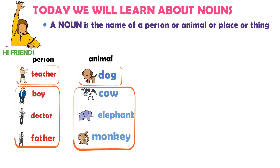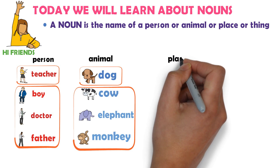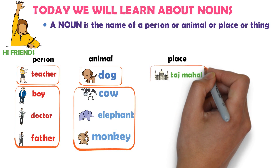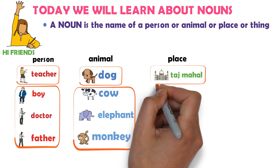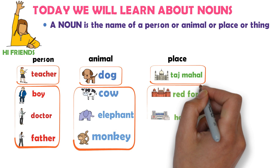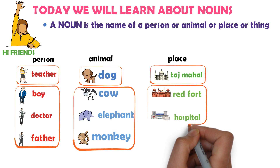Place example: Taj Mahal is a name of a place, so Taj Mahal is a noun. Red Fort is a name of a place. Hospital is a name of a place. So Red Fort and hospital are nouns.